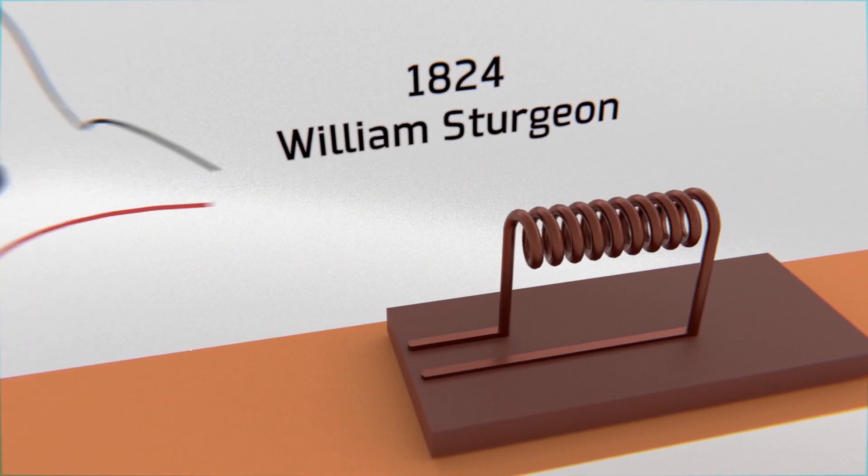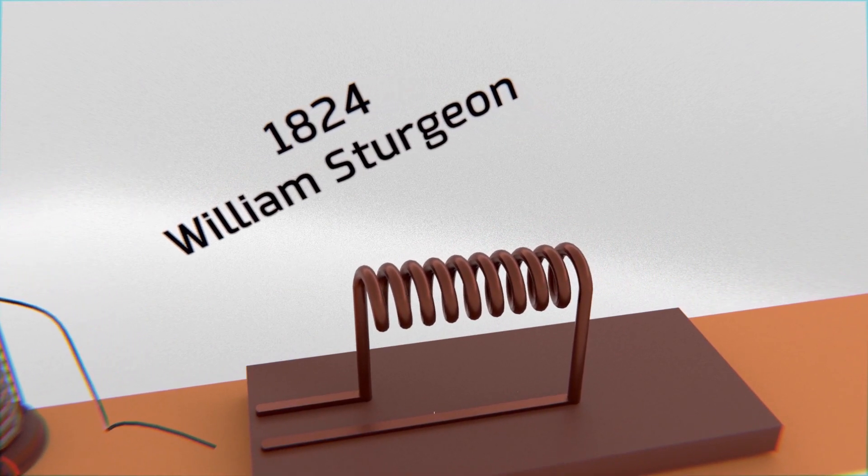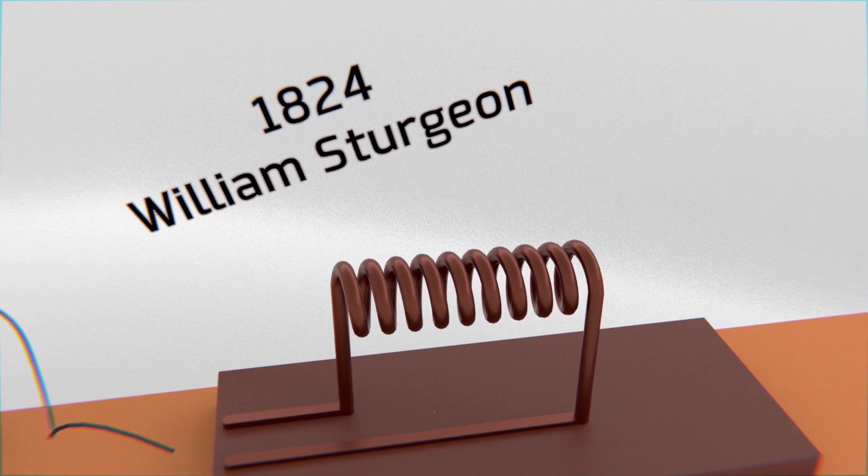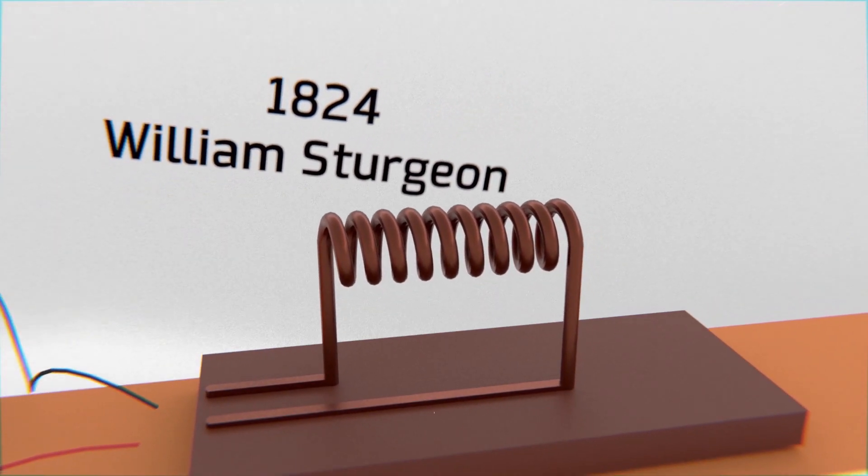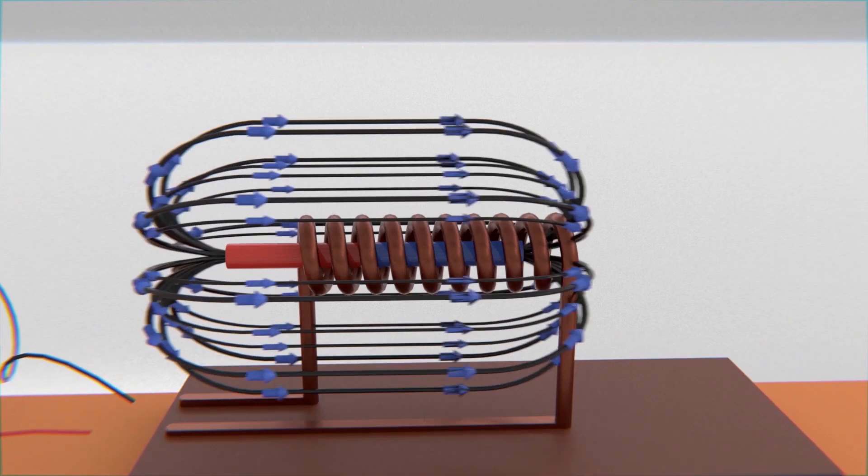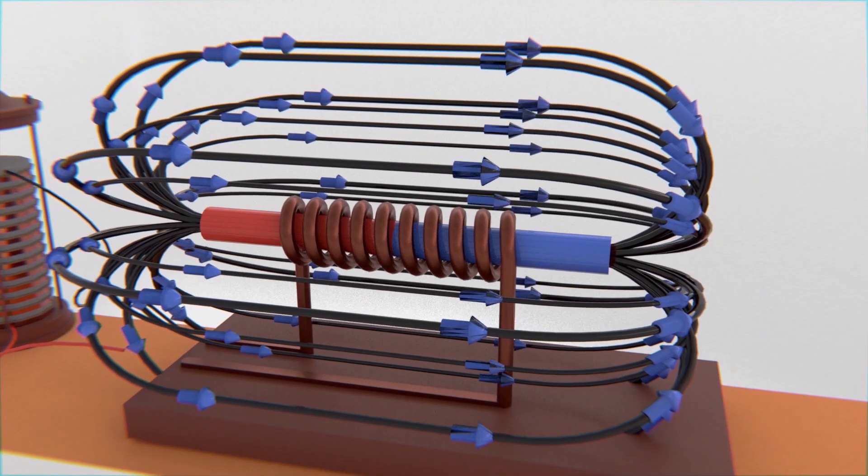So let's get help with our friend William Sturgeon, who made the following two great contributions to the development of the electric DC motor as we know it today. In 1824, he invented the electromagnets, which are pieces that work very similar to a magnet, but whose magnetic field is induced by an electric current.